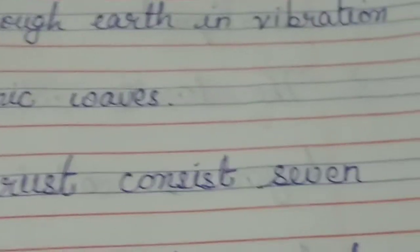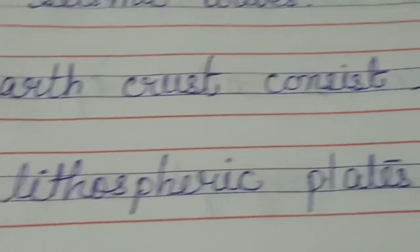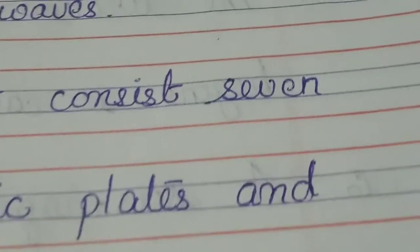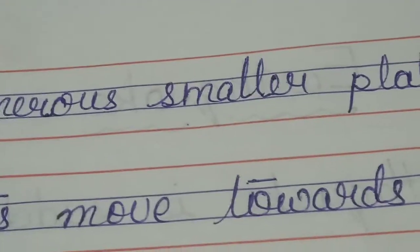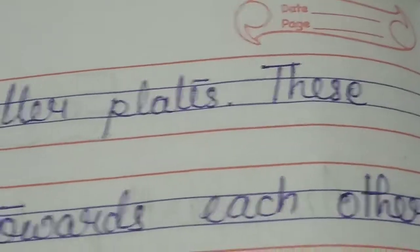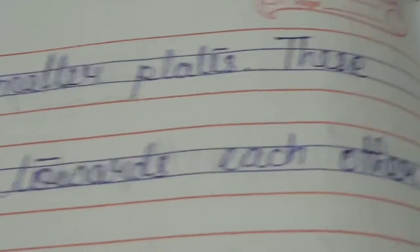The earth's crust consists of seven large lithospheric plates and numerous smaller plates. These plates move towards each other.